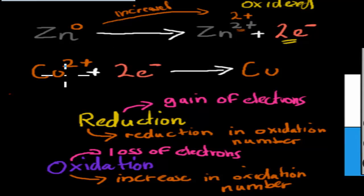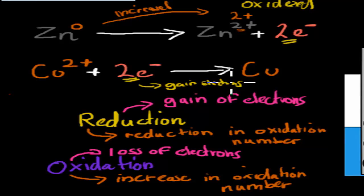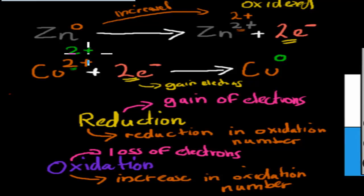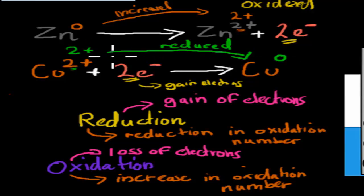Once zinc has been oxidized, copper will take those two electrons. Copper goes from a copper ion to elemental copper, so it has gained electrons. The oxidation number goes from 2+ to zero — so it has been reduced. Both definitions confirm it: copper gained electrons, and its oxidation number was reduced from 2+ to zero. Both ways tell us the same thing — copper has been reduced.